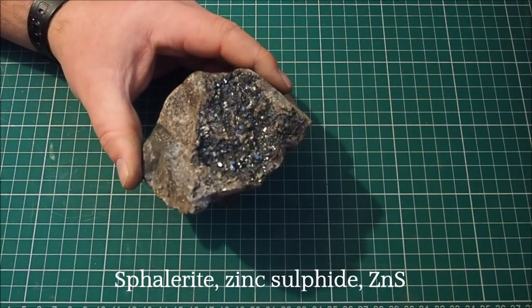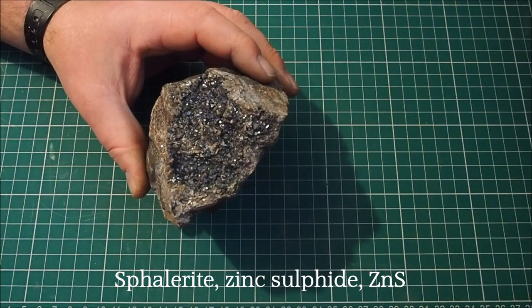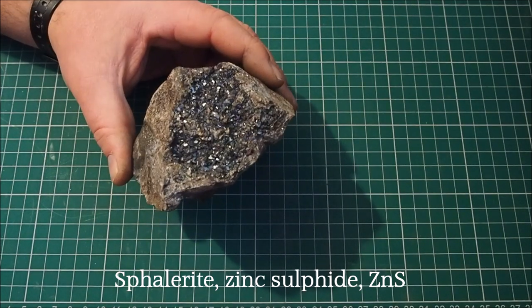This is Sphalerite, one of the most common types of zinc ore in the world. The miners have several old names for this. It's also known as zinc blend or blackjack.